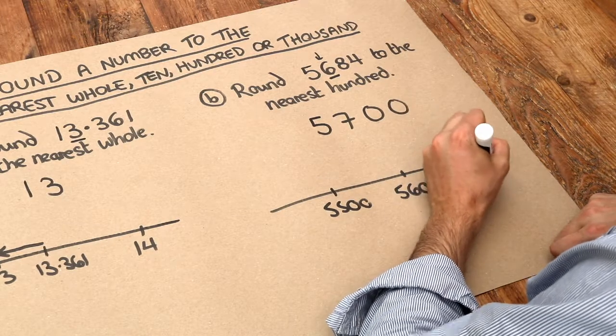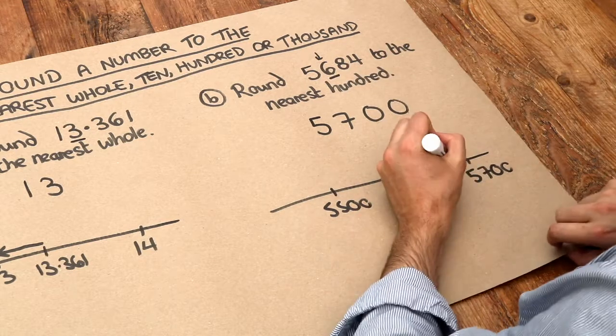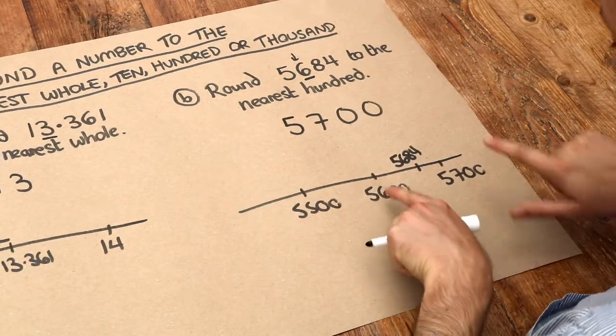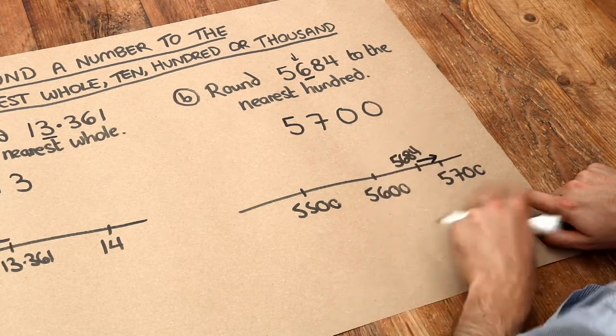5,700, and we've got the number 5,684, which is roughly here. Now if we want the nearest hundred, which of these two hundreds is the nearest? It's that one, so it's going to become that.